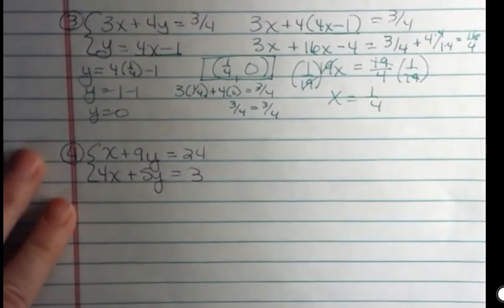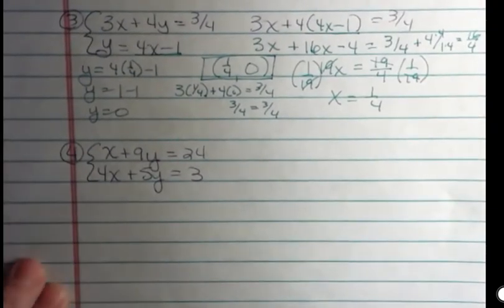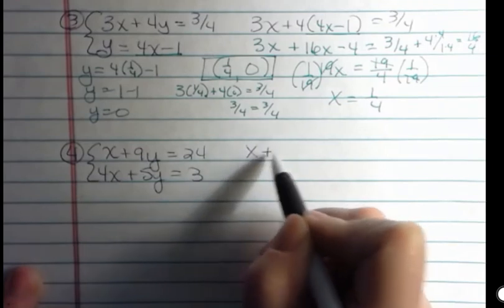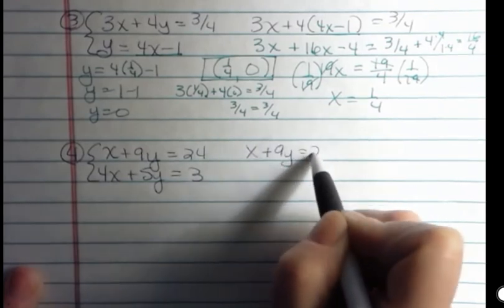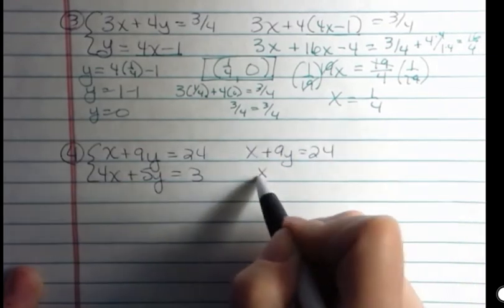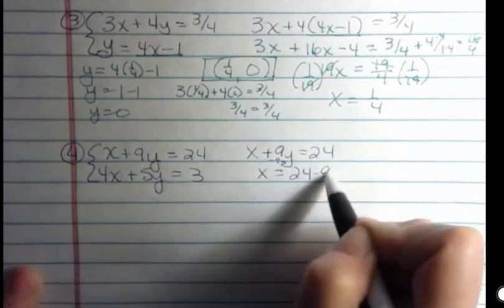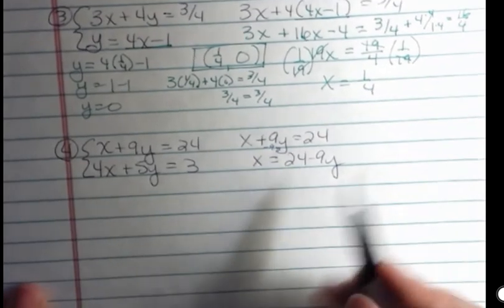And the last one, this one, it's not solved for a variable. Look, there's no x by itself, there's no y by itself, but we can easily change that. So what I'm going to do is take this one, and I'm going to move that 9y to the other side by subtracting 9y. Easy enough. Now I'm ready to substitute.